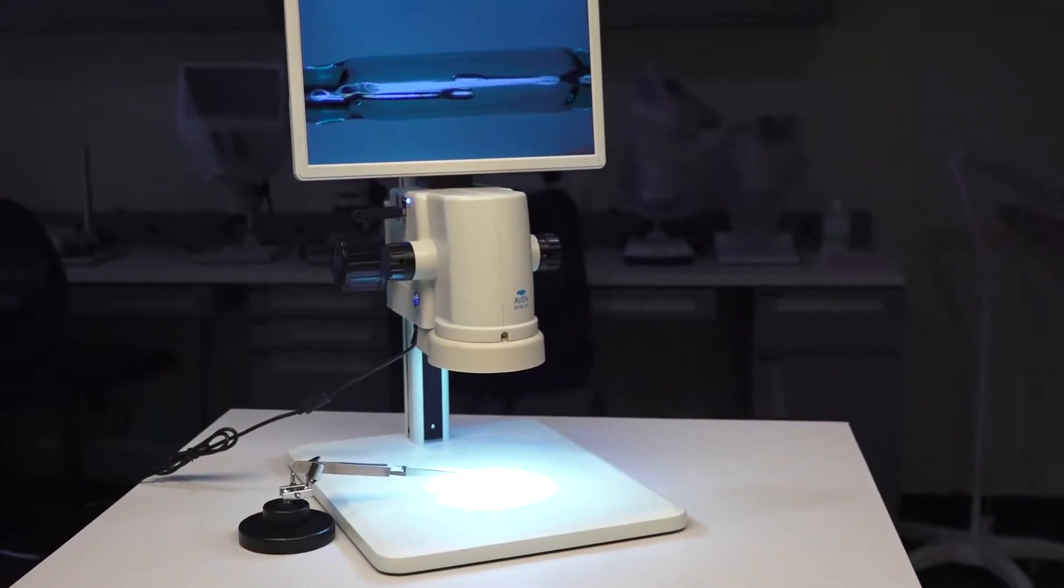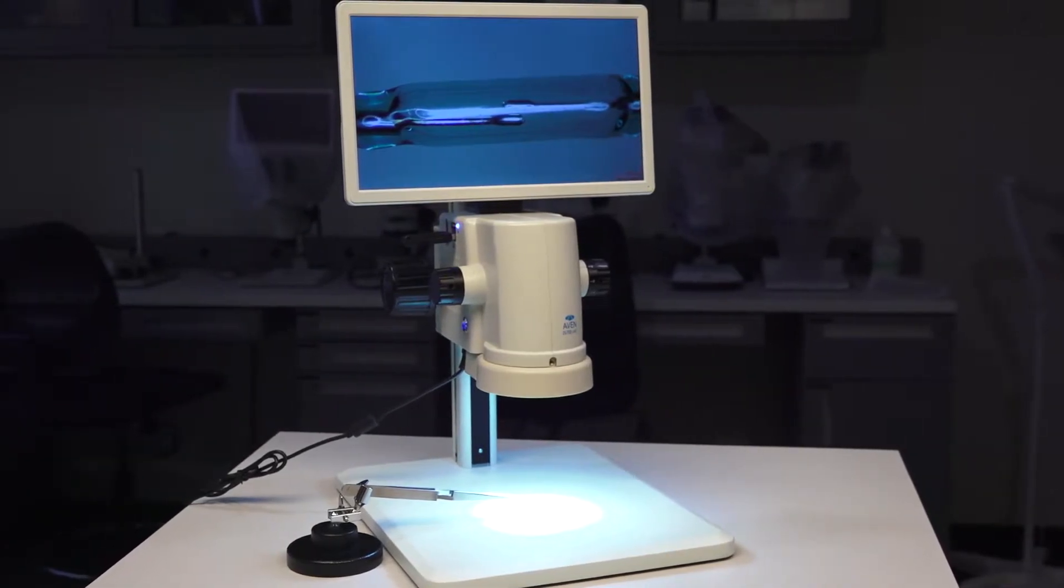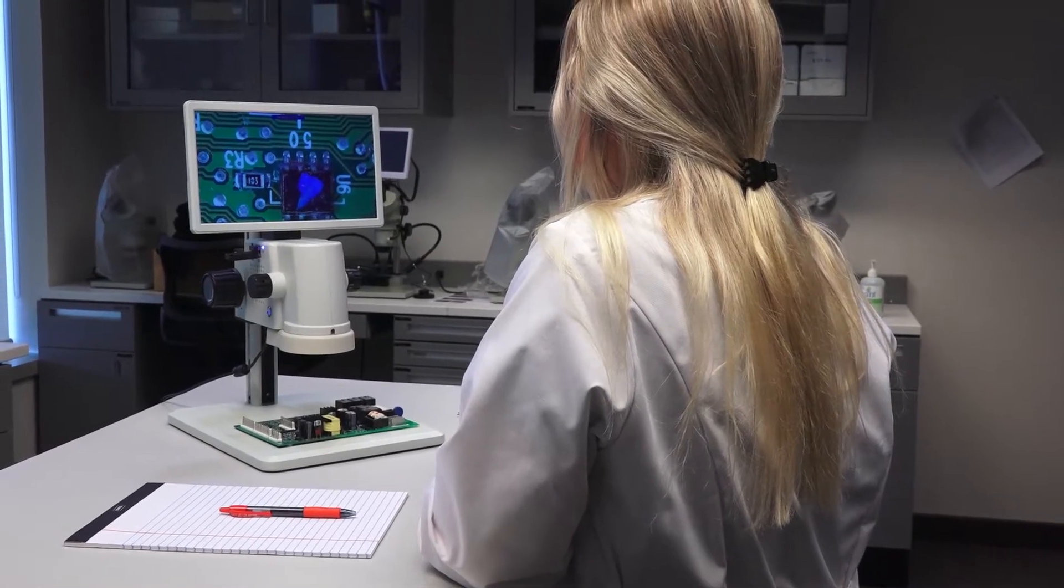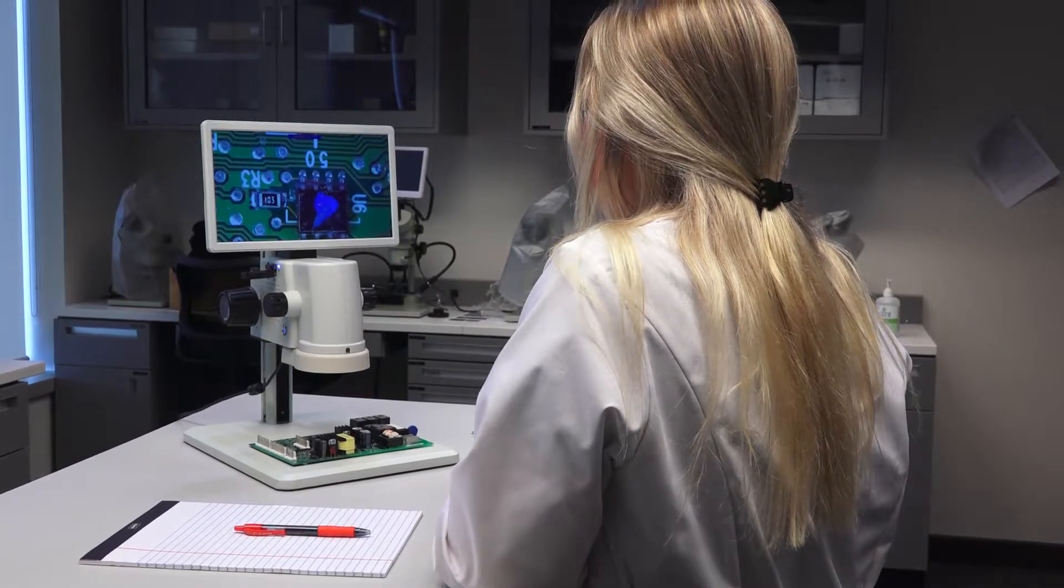This is Tremor with Avon Tools introducing our new Micro View visual inspection system. The part number for this is 26700-140, and let's look at what the hardware looks like.